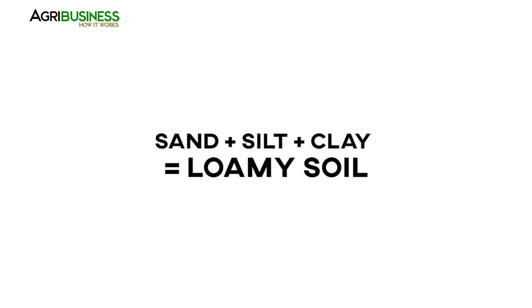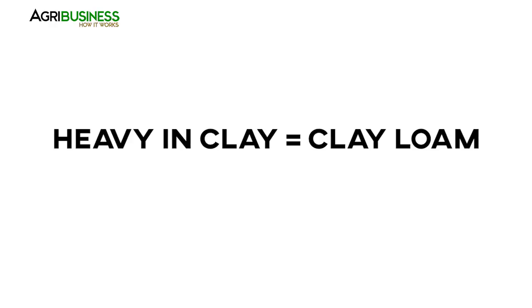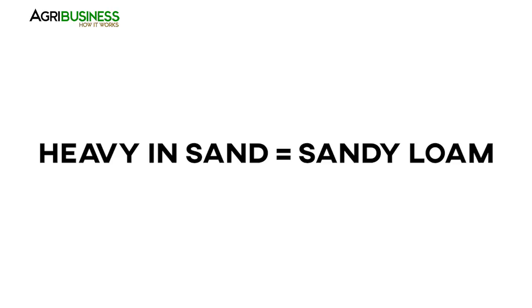We have what's called a textural triangle, with sand, silt, and clay at the corners. The formal name of a soil is given based upon the percentages of sand, silt, and clay it contains. A loamy soil has percentages of all three. If it is heavy in silt, we call it a silty loam; if heavy in clay, a clay loam; if heavy in sand, a sandy loam. The texture of a soil is important because it determines how much water we can apply.